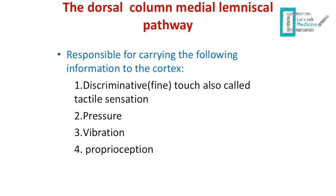When you walk, you don't consciously focus on where your legs are — that's your cerebellum constantly receiving information from your limbs about their location and adjusting your movements so you walk freely and naturally. But if you decide to consciously focus on your walking and know where your leg is, that is proprioception reaching the cortex, giving you awareness of your movement.